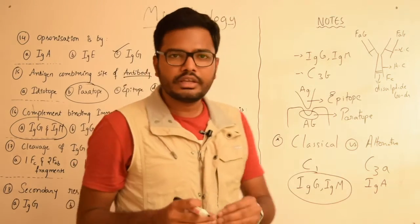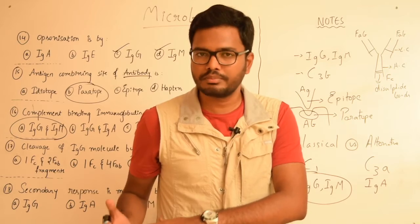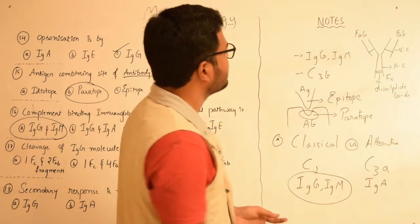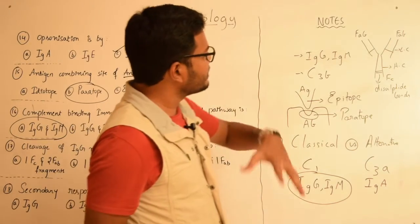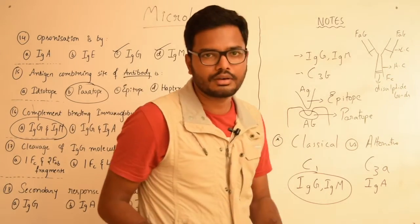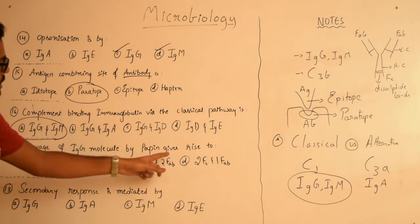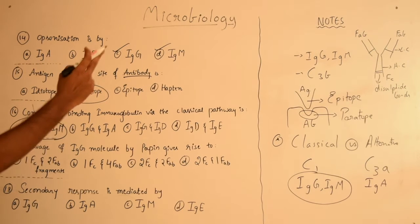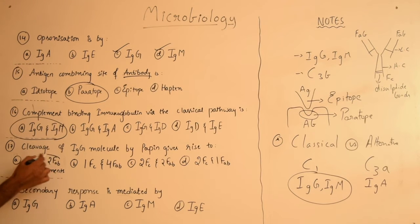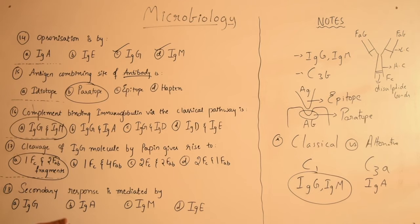So when we expose these antibodies to some kind of proteolytic enzymes like pepsin or papain, then there can be cleavage of these domains and the resultant products include two FAB domains and one FC domain. So now let's see the question again: cleavage of IgG molecule by papain gives rise to one FC and two FAB fragments. Hope it's clear.